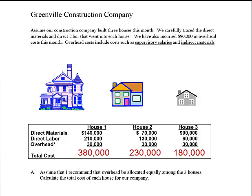So that was a simple allocation of overhead: $90,000 divided by three. At this point you should ask yourself, is that a good way or even a fair way to allocate overhead costs? These three houses are of different sizes and different complexity. Do you think they each used an equal amount of indirect materials or an equal amount of supervisor attention? I'd guess no — the more complex house likely used far more indirect materials and required much more supervisory skill than the simple starter home.